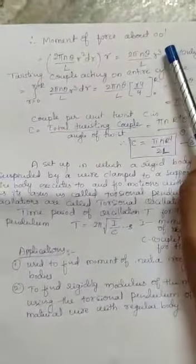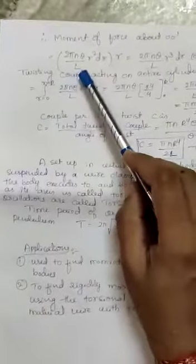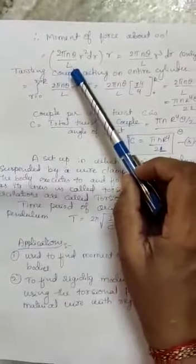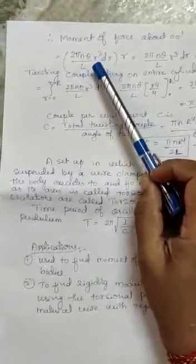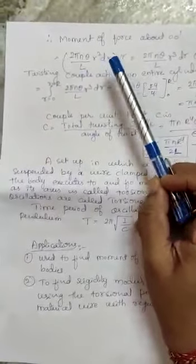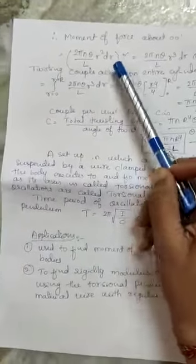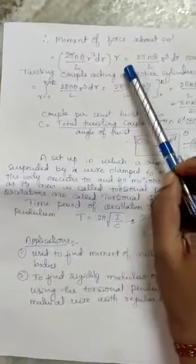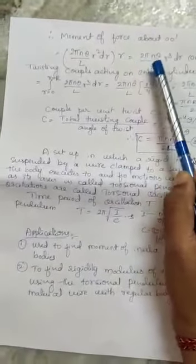...that is axis, it is considered as 2πnθ/l × r²dr × r. Here that is the distance, it is considered as a radius. Next, 2πnθ/l r³dr...